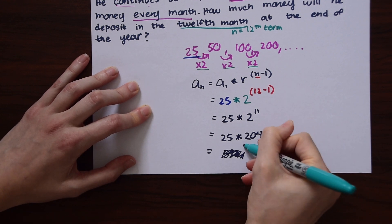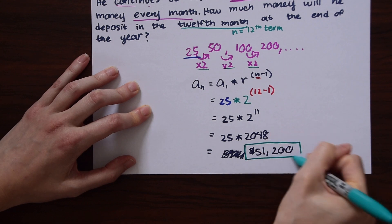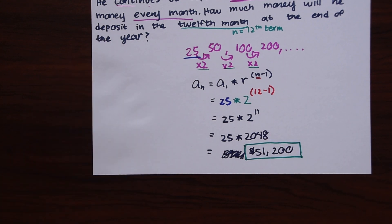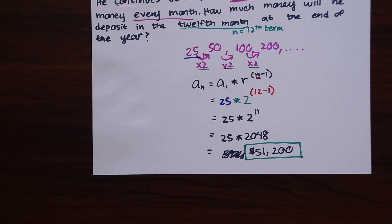And that's our answer — that's how much Conrad will be depositing in the 12th month of the year. If you're looking for more questions just like these, check out the practice questions — the link is in the description below. If this video helped you, please give it a like and subscribe. Happy calculating!